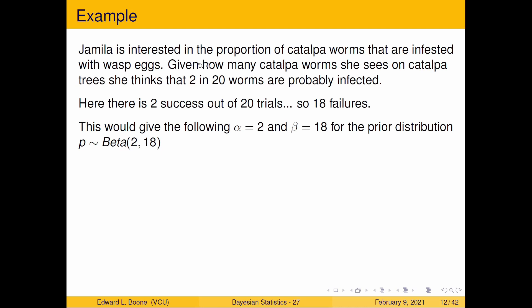So Jamila is interested in the proportion of caterpillar worms that are infested with wasp eggs. Given how many caterpillar worms she sees on a caterpillar tree, she thinks maybe 2 in 20 worms are probably infected. So here, she's telling you there's 2 successes out of 20 trials. So that would mean 18 failures. So we could specify alpha equal to 2, beta equal to 18. And that would incorporate this information into our prior distribution.